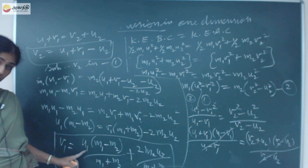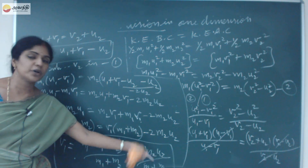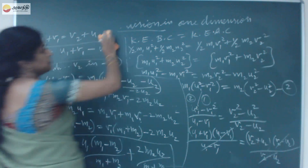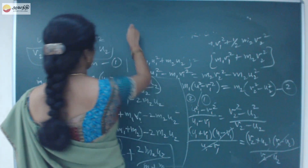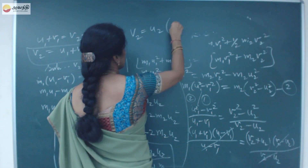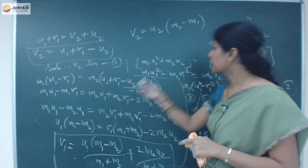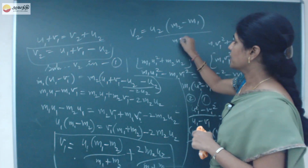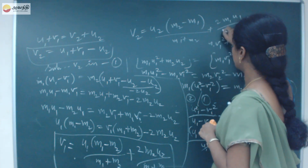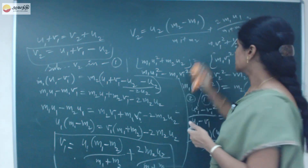Similarly, we can calculate V2. V2 equals U2 times (M2 minus M1) divided by (M1 plus M2), plus 2 M1 U1 divided by (M1 plus M2). So V2 equals [U2(M2 minus M1) plus 2 M1 U1] divided by (M1 plus M2).